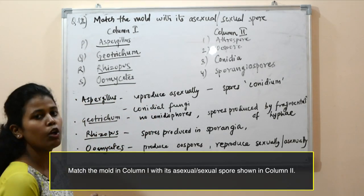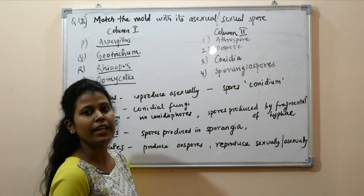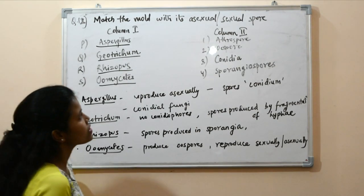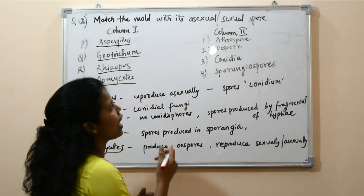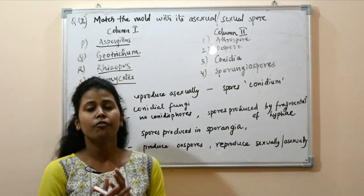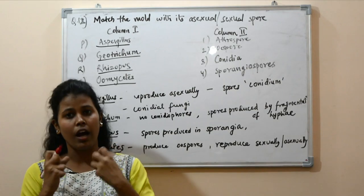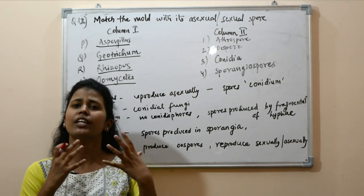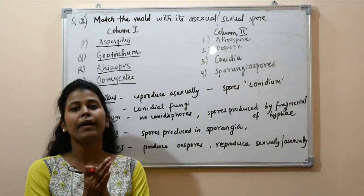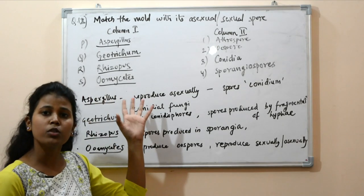Question number 12: match the mold with its asexual or sexual spores. Column 1 has different genera of molds — Aspergillus, Geotrichum, Rhizopus, and Oomycetes — and column 2 has the spores: arthrospores, oospores, conidia, and sporangiospores. Molds reproduce by producing spores, which are resistant to harsh environmental conditions and grow when favorable conditions are found. Spores can be asexual or sexual.